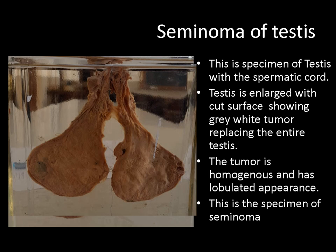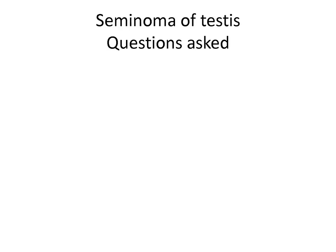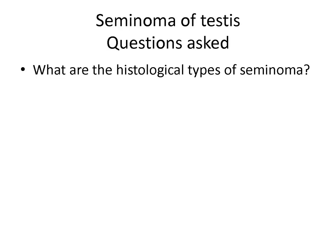A homogenous lobulated appearance is a seminoma, but if there is a variegated cystic appearance, it will be in favor of teratoma. The questions that can be asked include the different histological types of testicular tumors. You have germ cell tumors which can be seminomatous or non-seminomatous. Types of seminomas include a typical seminoma occurring in men of 30 to 40 years, a spermatocytic seminoma in men older than 50 years, and an anaplastic seminoma which is a more aggressive tumor with high chances of local invasion.